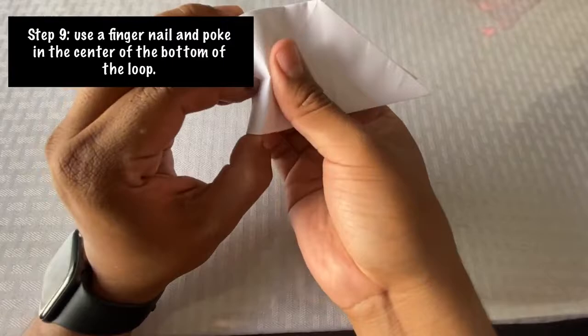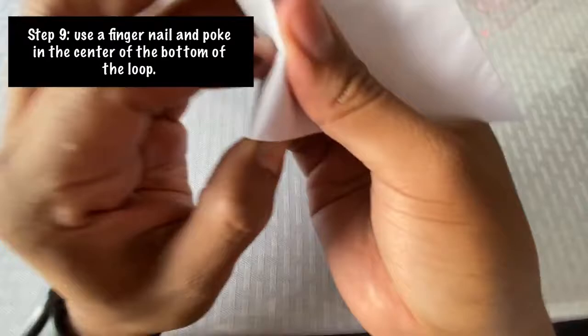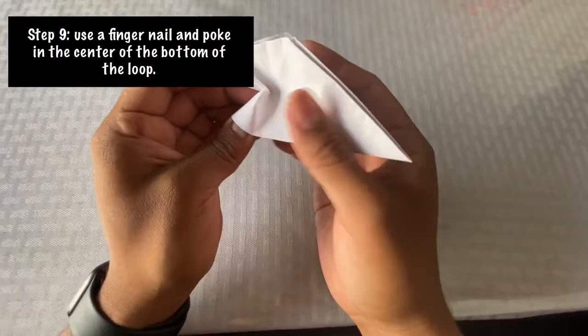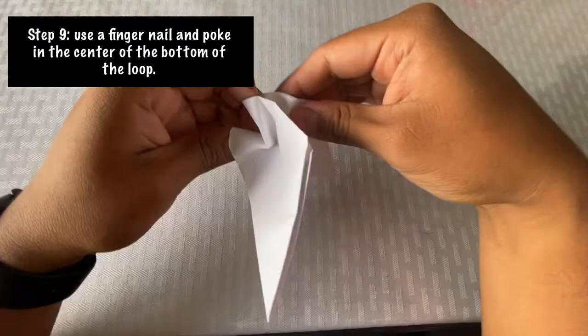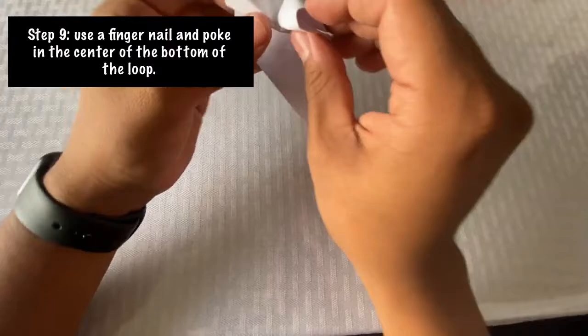Moving on to Step 9: use a fingernail and poke in the center of the bottom of the loop. At the same time that you're doing this, make sure you hold on to the top of the butterfly to maintain the shape. Slowly bend it down and both ways.